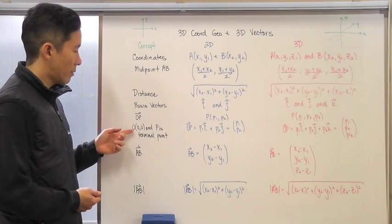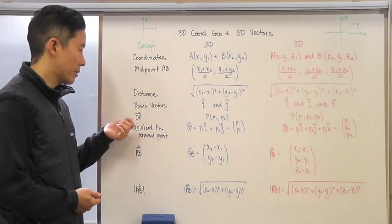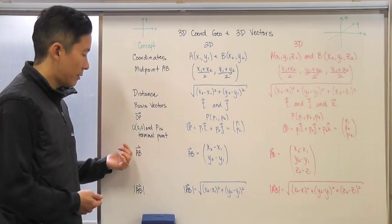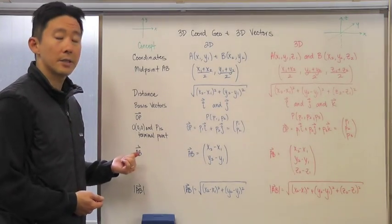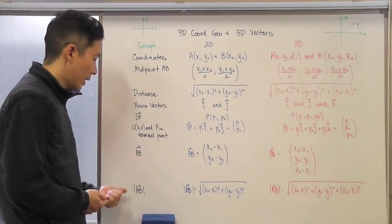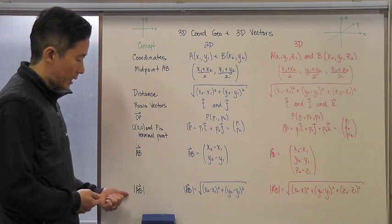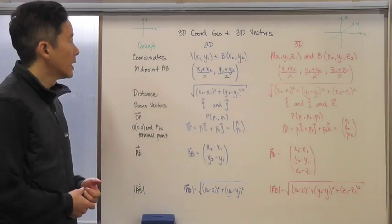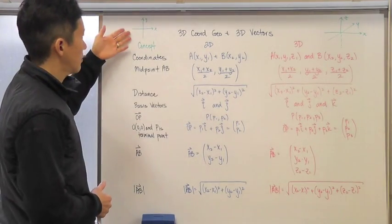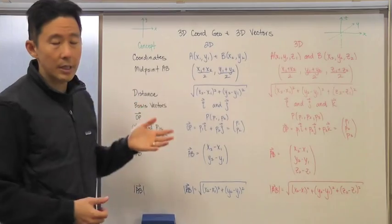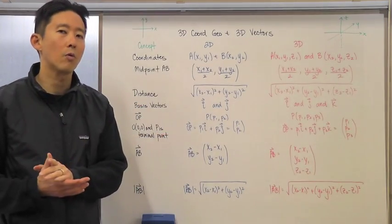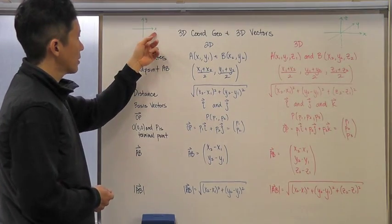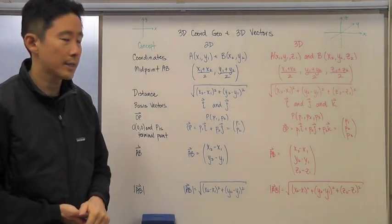What is vector OP if O is the origin and P is the terminal point — in other words, a vector in standard position? What if you have a vector that is not in standard position? How do you find the representation of that vector, and then how do you find the actual magnitude? Let's take a look at the two-dimensional case — the Cartesian coordinate plane with an x-axis and a y-axis.